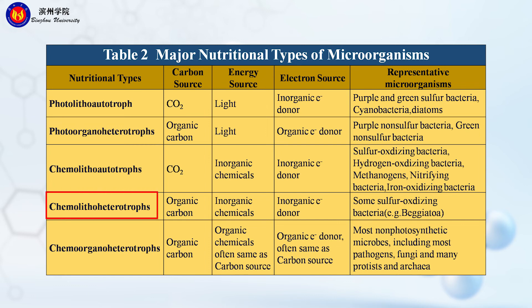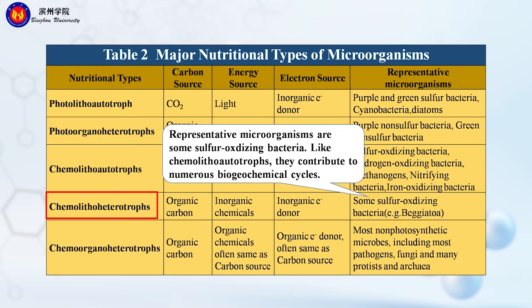The fifth and last type is chemolithol heterotrophs. These microbes use organic carbon as their carbon source, and inorganic chemicals as their energy source and electron source. The representative microorganisms are some sulfur-oxidizing bacteria. Like chemo-organoheterotrophs, they contribute to numerous biogeochemical cycles.